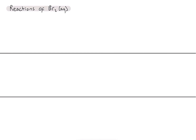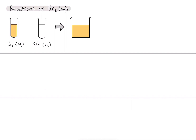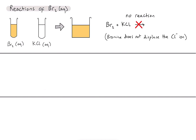Now let's look at the reactions of bromine. First, reacting bromine with potassium chloride — there's no visible change, the orange colour is still there, maybe a little paler because we've added a colourless solution. We can infer that no reaction has occurred. So bromine does not displace the chloride ion, indicating that bromine is less reactive than chlorine, which is consistent with what we identified in the first set of reactions.